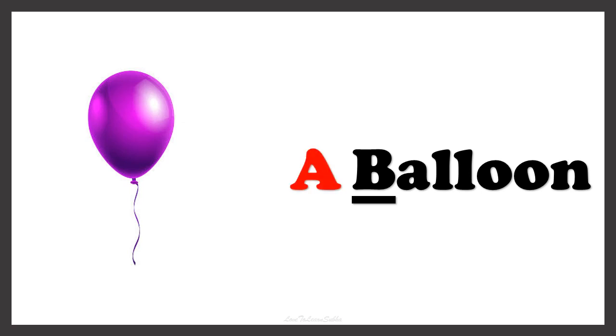This is a picture of BALLOON. Let's find out the article that comes before the word BALLOON. The word BALLOON starts with the letter B. We know that B is a consonant, so we use the article A. Now this is A BALLOON.